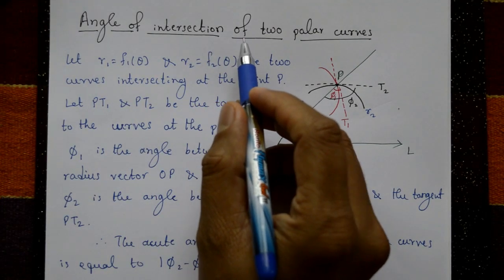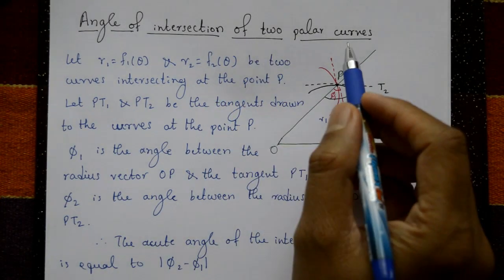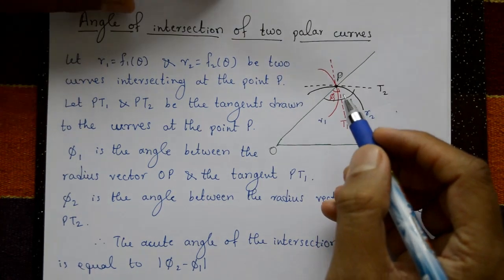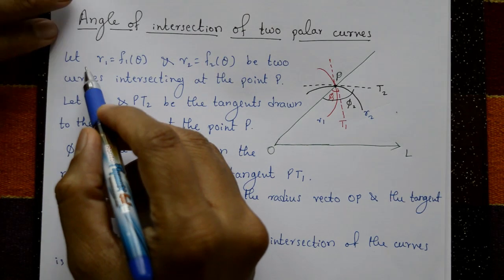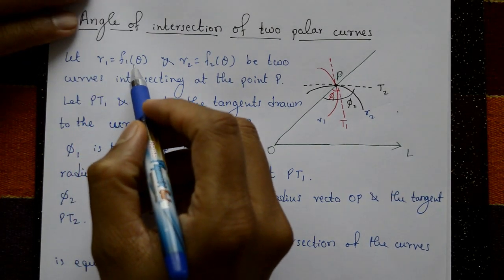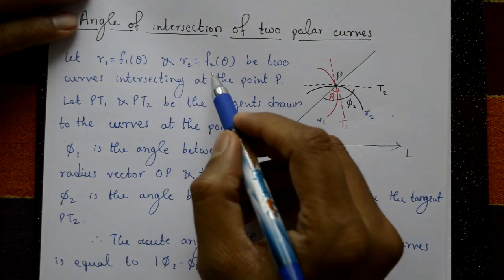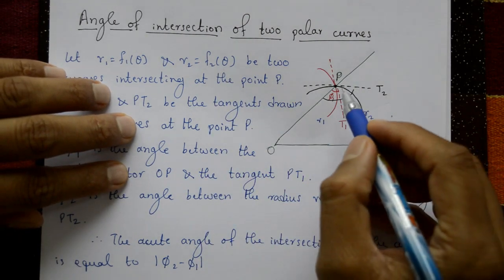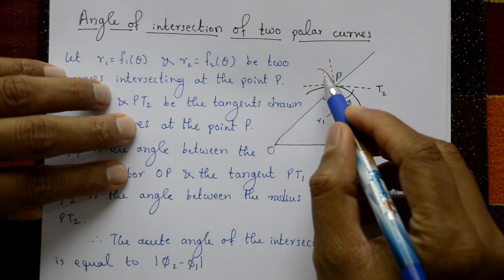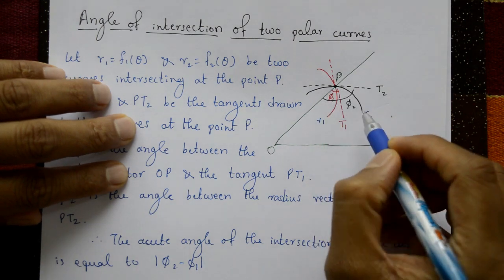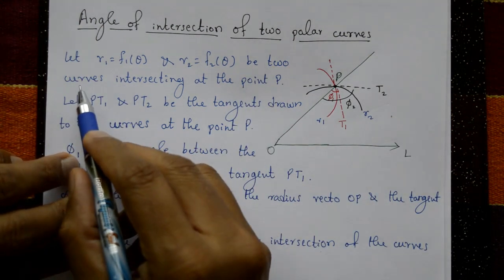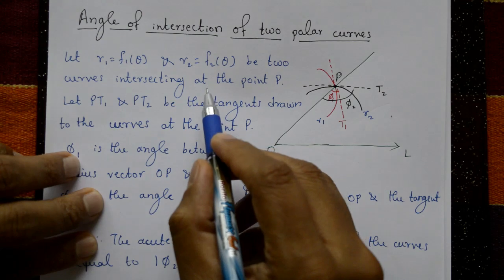Angle of intersection of two polar curves. This is an initial line. Let r1 = f1(t) and r2 = f2(t) be two curves, the first curve r1 and the second curve r2, intersecting at the point P.